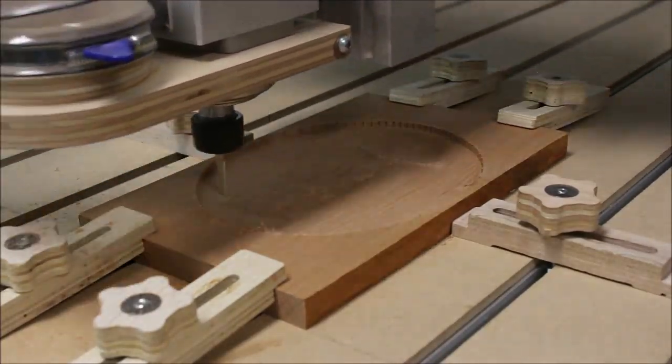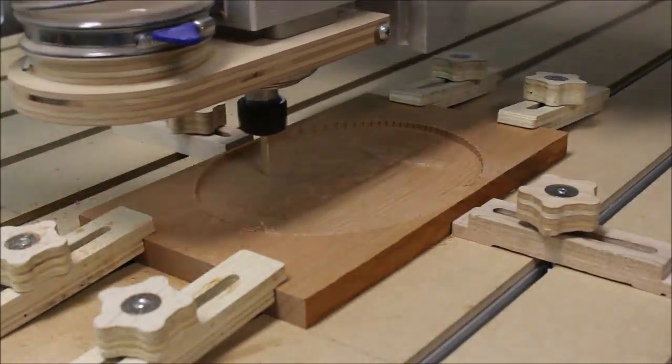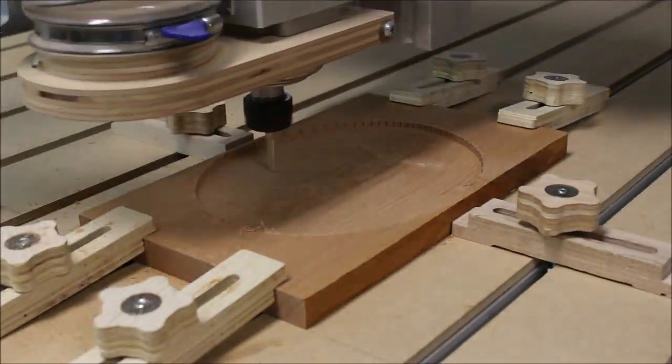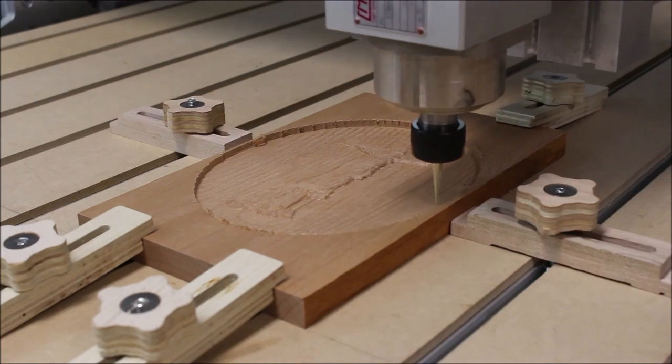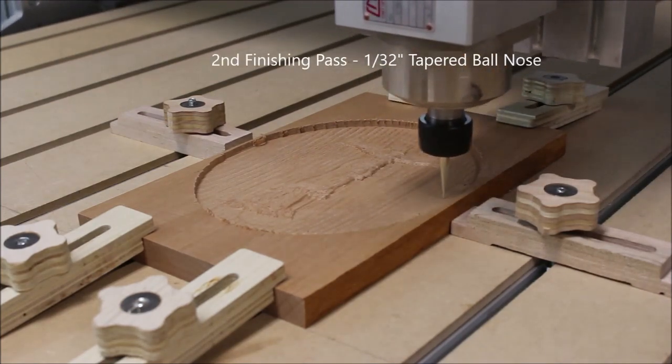I used a quarter-inch end mill for the roughing pass, and I didn't even bother trying to film that with the dust shoe off because it makes such a mess. But with these other two passes, I'm just using a tapered ball nose.